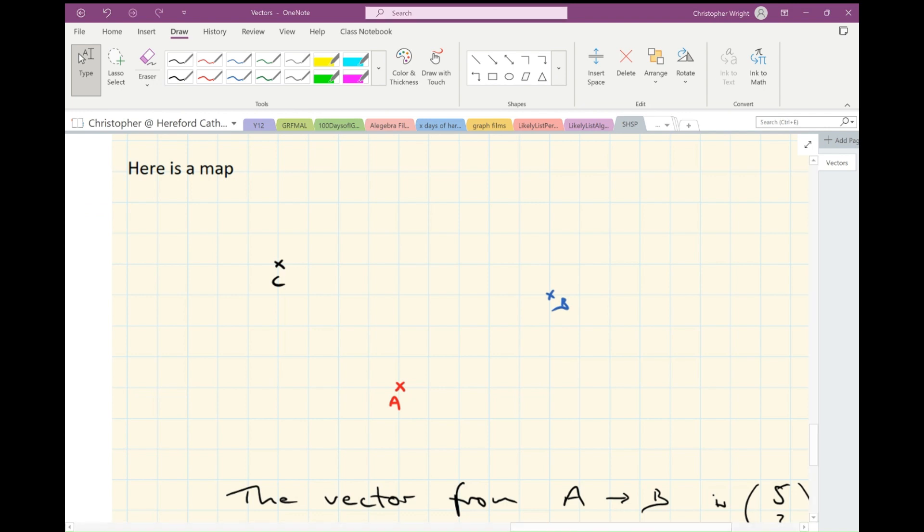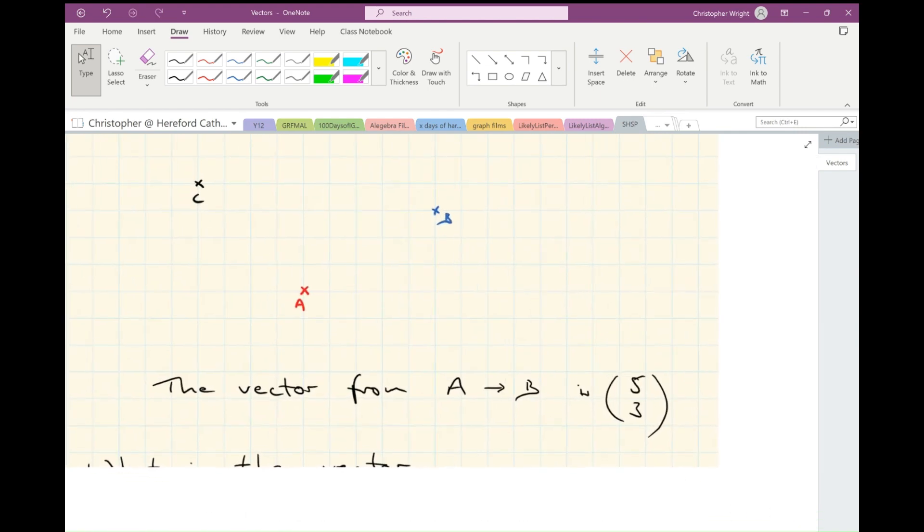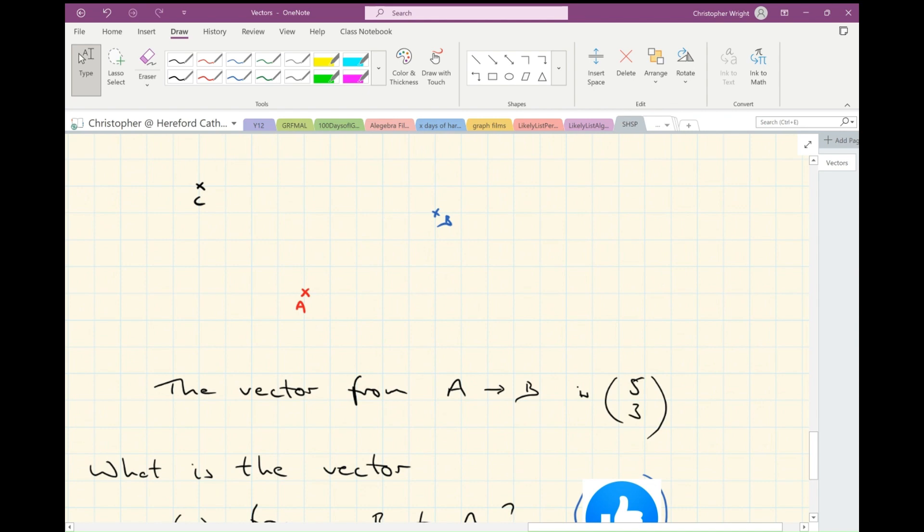In this question, I've got a map with three points labeled A, B, and C. The question tells me that the vector from A to B is (5, 3). First of all, check you agree with that.